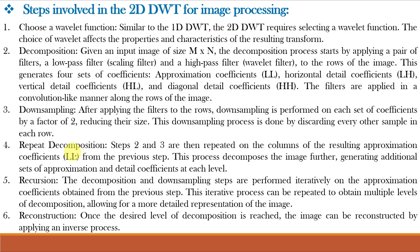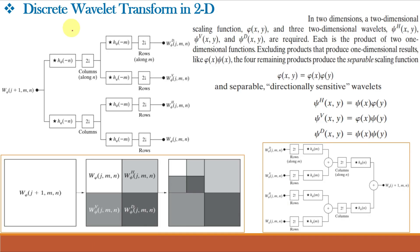Next, we repeat the decomposition process — steps 2 and 3 are repeated on the columns of the resulting LL band from the previous step. This further decomposes the image, generating additional sets of approximation and detail coefficients at each level. The decomposition and downsampling steps are performed iteratively on the approximation coefficients. This iterative process can be repeated to obtain multiple levels of decomposition, allowing for a more detailed representation of the image. Finally, using the inverse DWT, once the desired level of decomposition is reached, the image can be reconstructed by applying an inverse process.